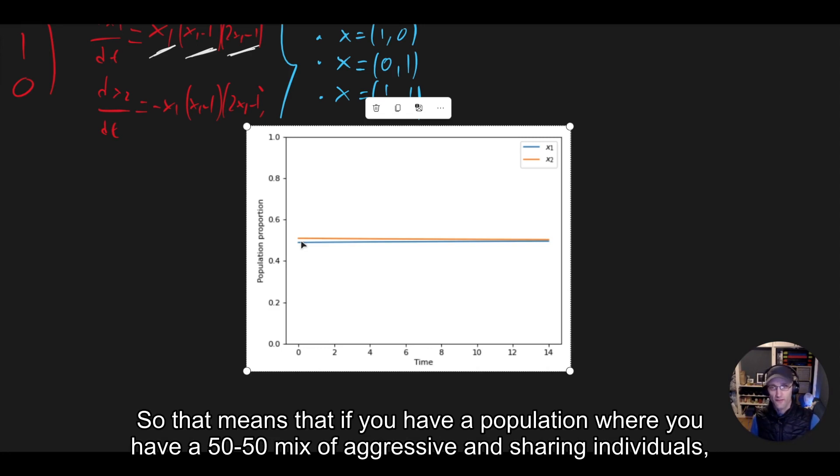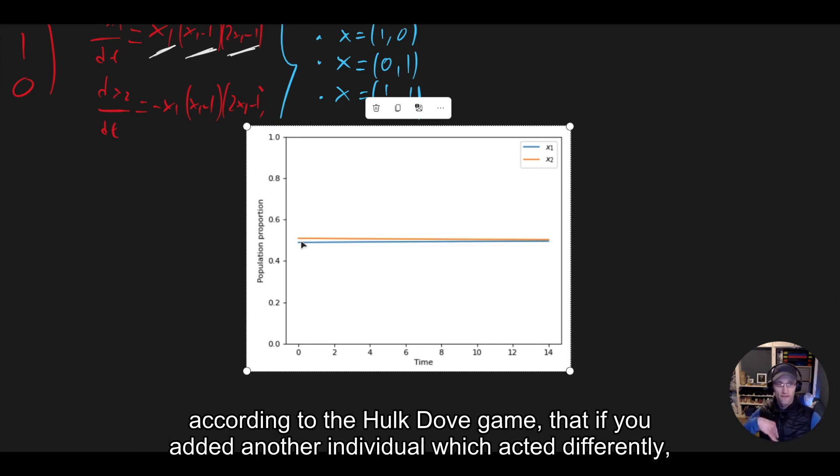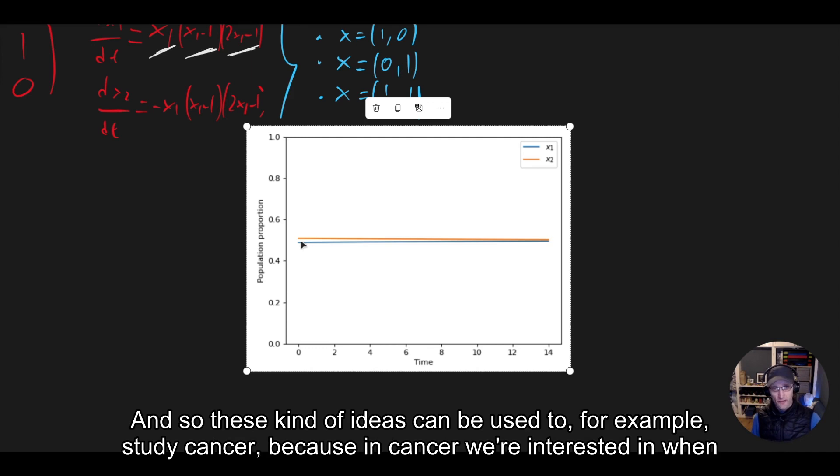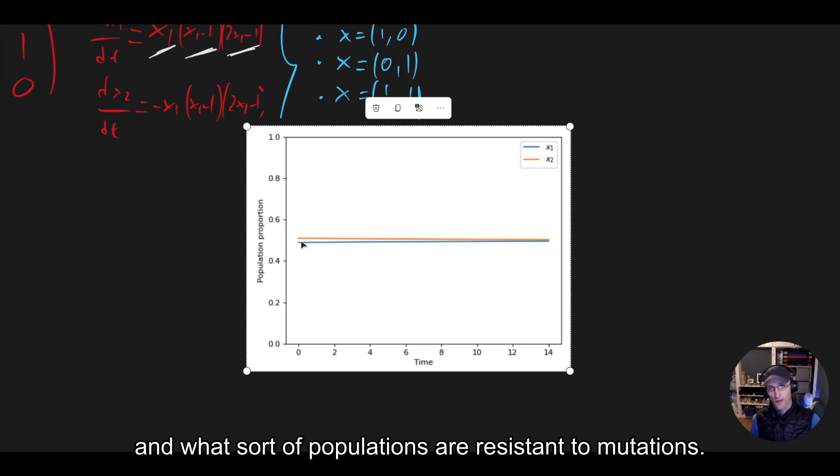So that means that if you have a population where you have a mix, a 50-50 mix of aggressive and sharing individuals, according to the Hawk-Dove game, that if you added another individual which acted differently, you would go back to this population. And so these kind of ideas can be used to, for example, study cancer, because in cancer we're interested in when and what sort of populations are resistant to mutations.